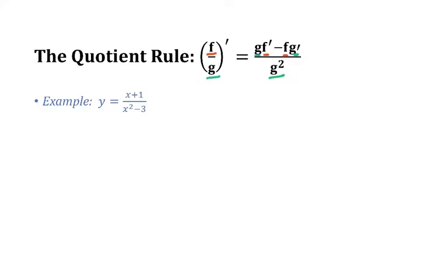In this example, we have y = (x+1)/(x²-3). The upper function f is x+1, making f' = 1. Our lower function is x²-3, and the derivative of x²-3 is 2x. I do this work on the side so I'm ready to apply the quotient rule.